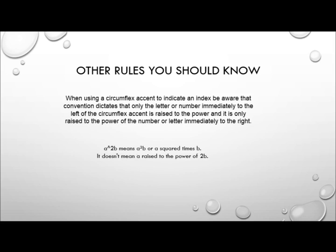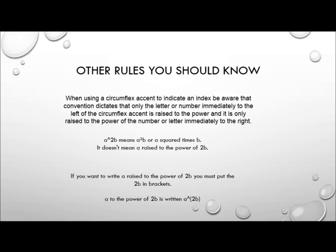When using the circumflex accent to indicate an index, be aware that convention dictates that only the letter or number immediately to the left of the circumflex is raised to the power, and it is only raised to the power of the number or letter immediately to the right. So a circumflex 2b means a squared times b — it does not mean a raised to the power of 2b. If you want to write a raised to the power of 2b, you must put the 2b in brackets: a circumflex open brackets 2b close brackets.